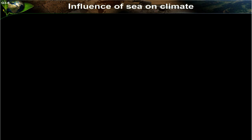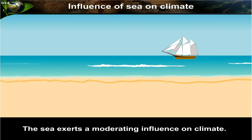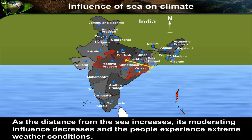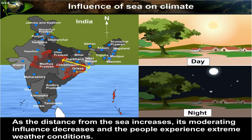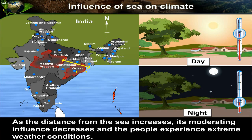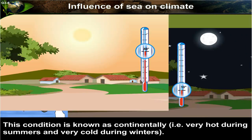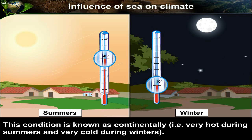Influence of sea on climate. The sea exerts a moderating influence on climate. As the distance from the sea increases, its moderating influence decreases and the people experience extreme weather conditions. This condition is known as continentality — very hot during summers and very cold during winters.